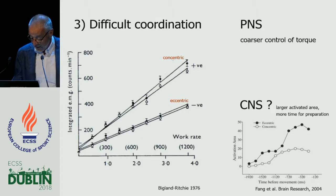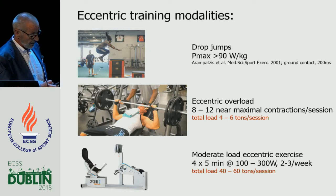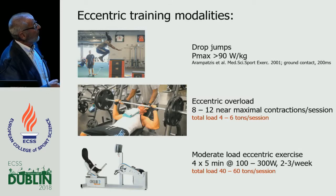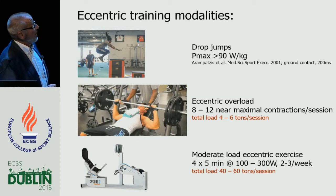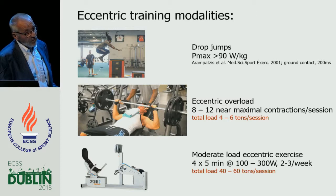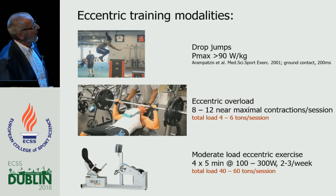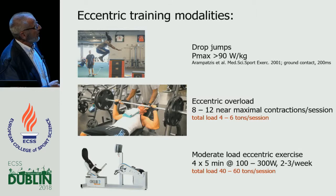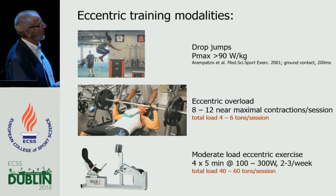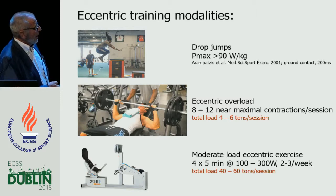When we want to use eccentric modalities, we have basically three possibilities. One is the drop jump, which gives you power greater than 90 watts per kilogram over a very short eccentric action of around 200 milliseconds. You can do classic strength training — concentric and eccentric — with an eccentric overload of about 20% at those angular speeds using devices. In an eccentric overload session, you can move about four to six tons.